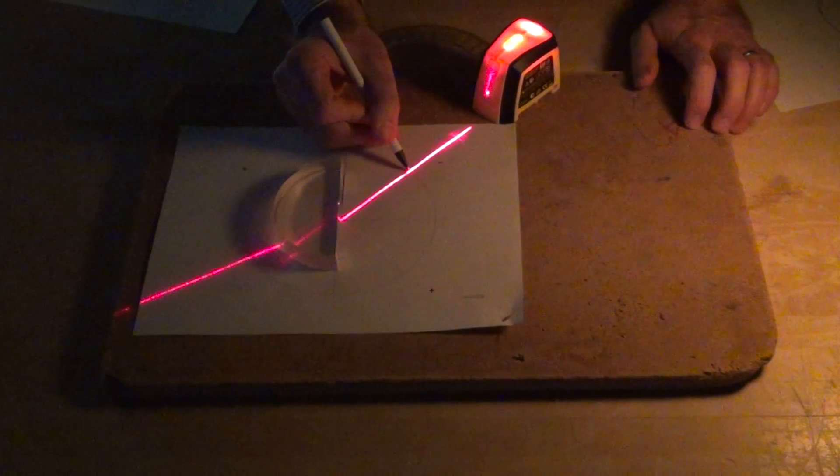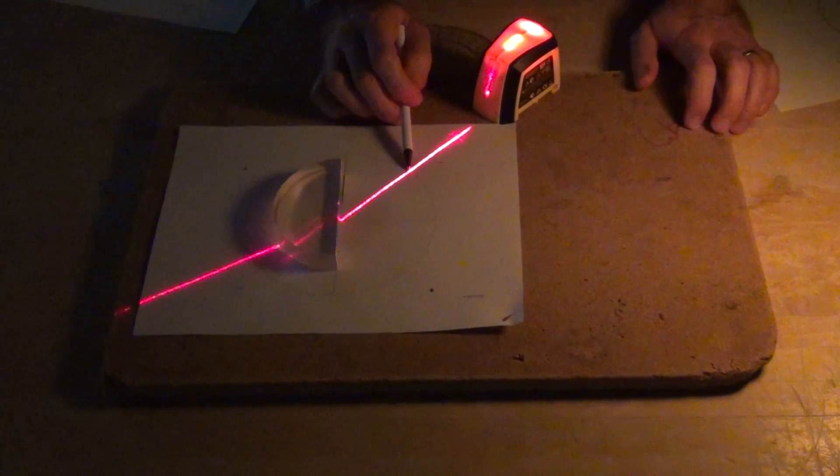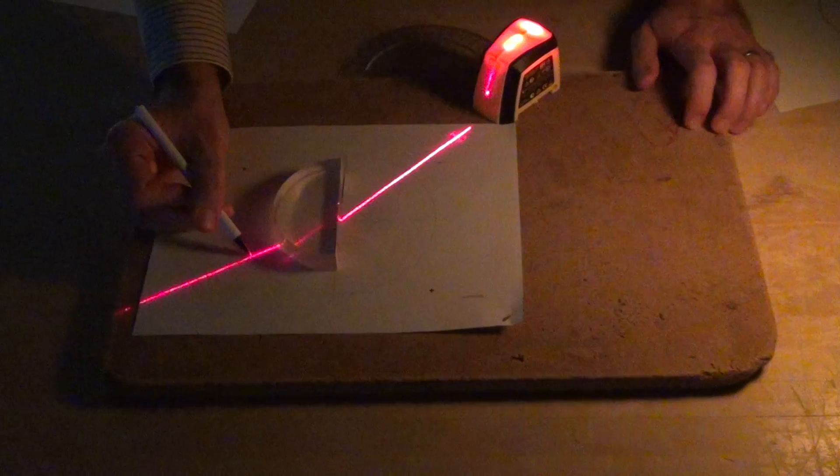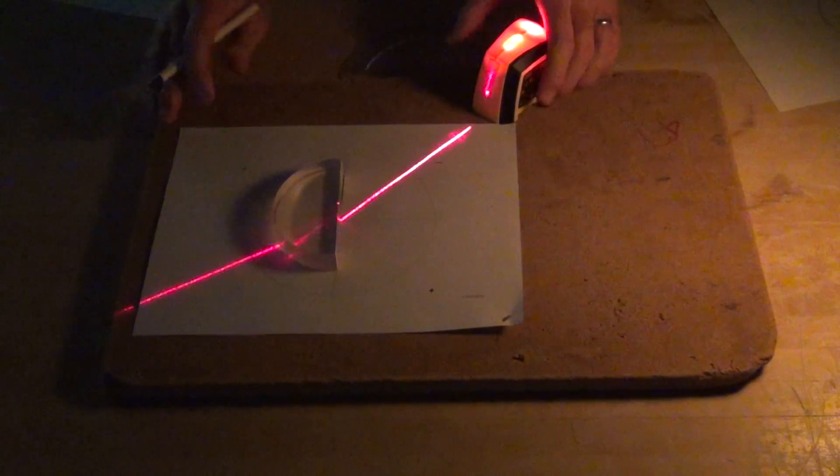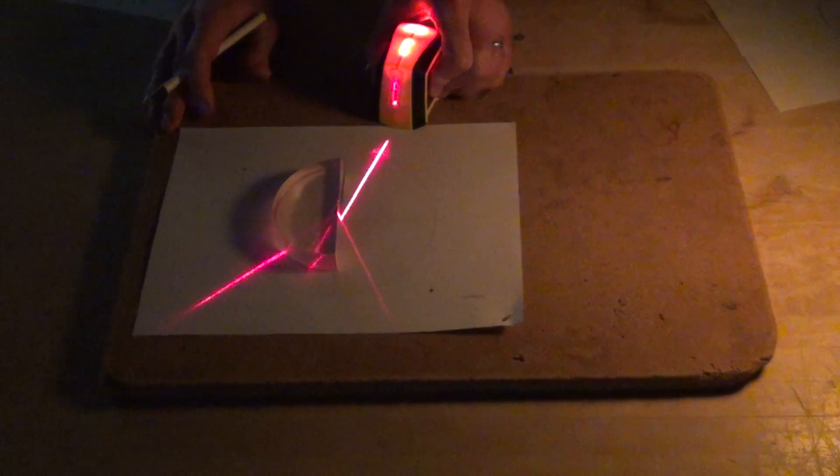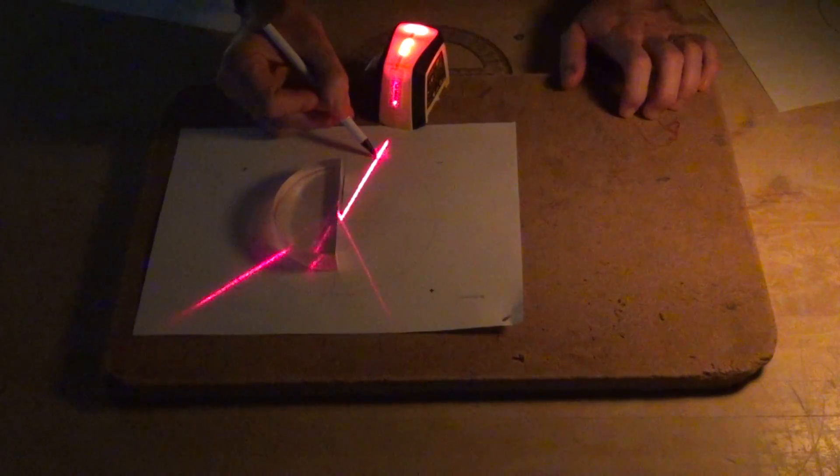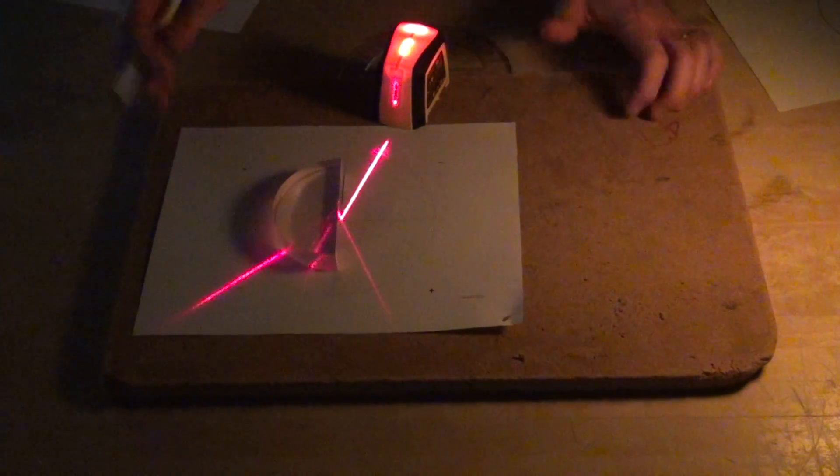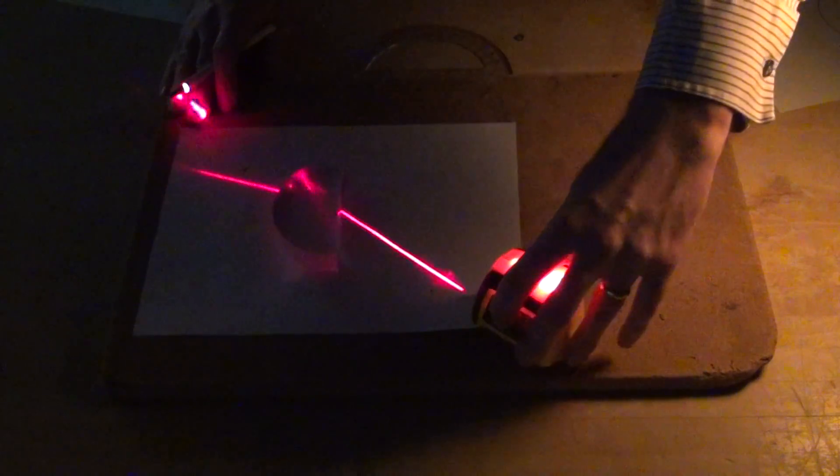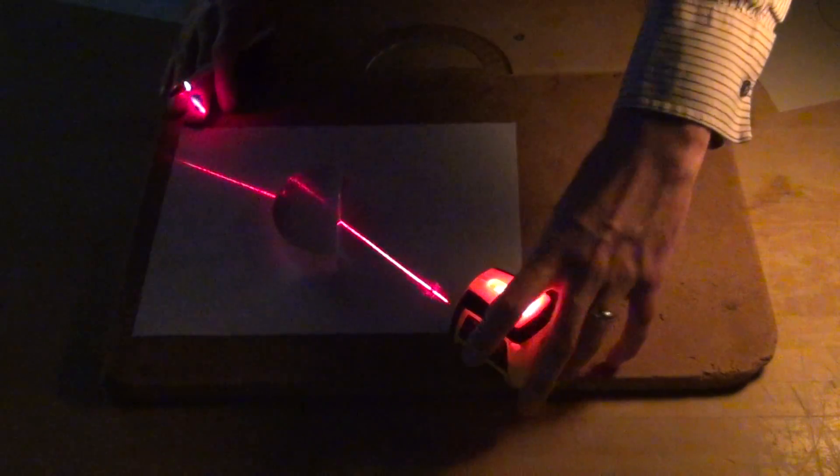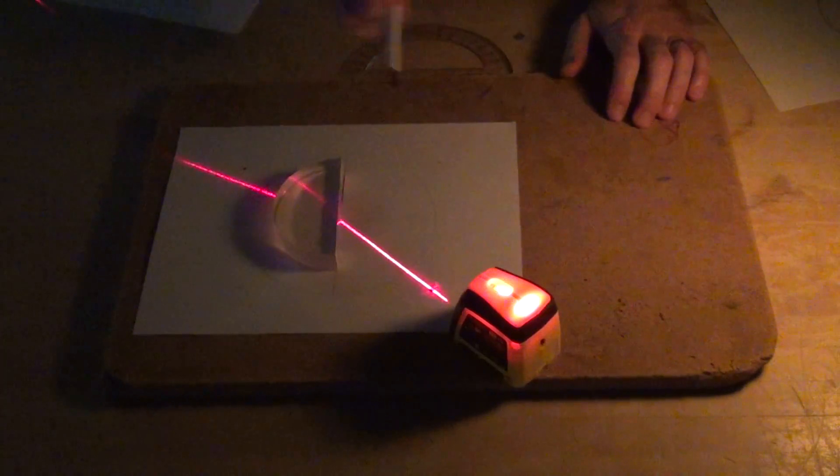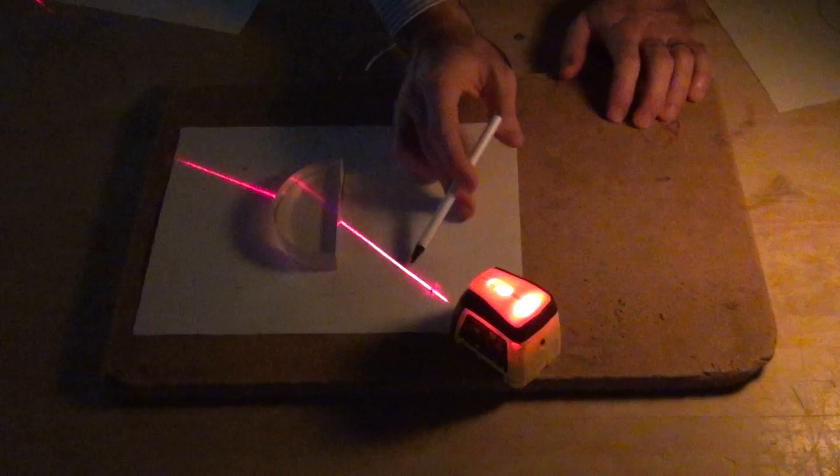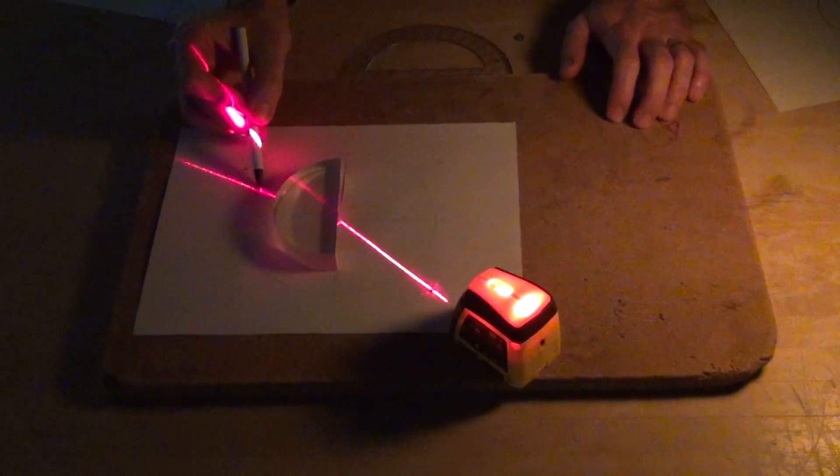And so you'll want to mark points. For instance, you could mark this as A incident, and this is A refracted. And then, at a different point, B incident and B refracted. And do it on both sides of the normal, C incident, C refracted.